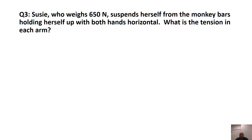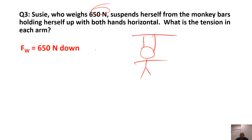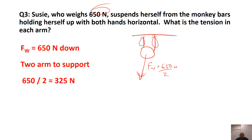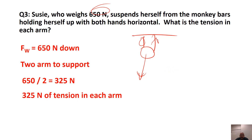Susie, who weighs 650 newtons, suspends herself from the monkey bars holding herself up with both hands. What's the tension in each arm? Her weight is 650 newtons, and each arm has to support part of that weight. We divide 650 by 2 and get 325 newtons. Each arm has a force of 325 newtons up, totaling 650 newtons — double that.